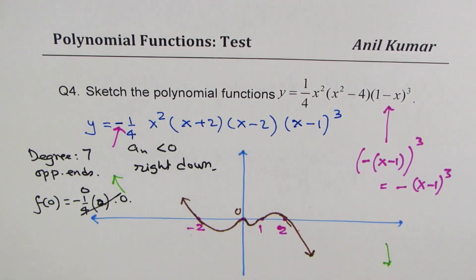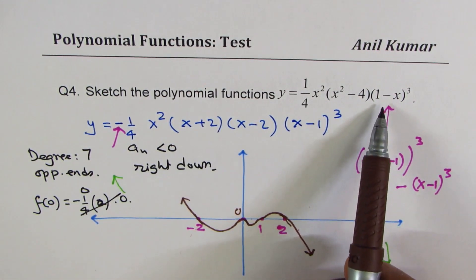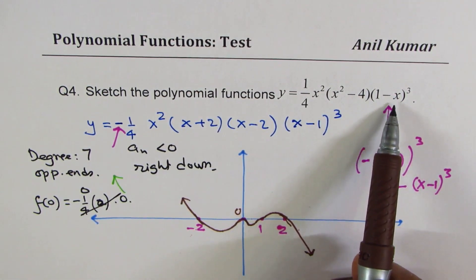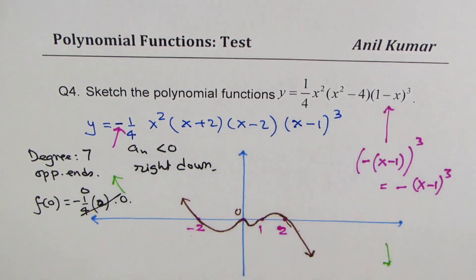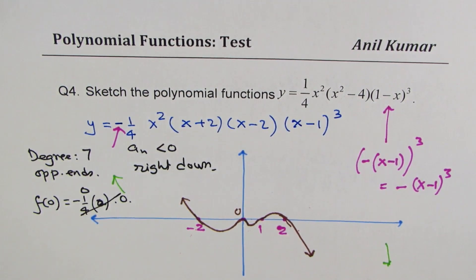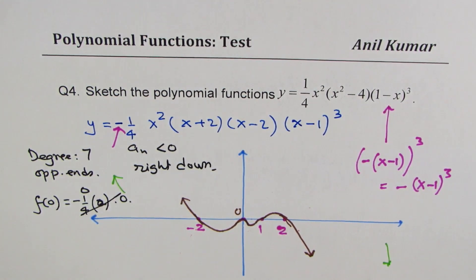So that becomes the graph of the given function. The key is to understand that (1 − x) cubed leads to a leading coefficient which is negative. With this, you should have a clear understanding of how to sketch polynomial functions in factored form and find their characteristics when zeros are provided.